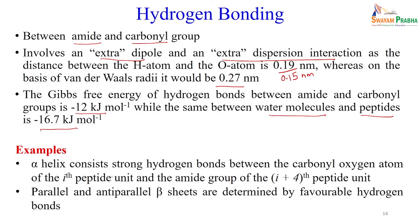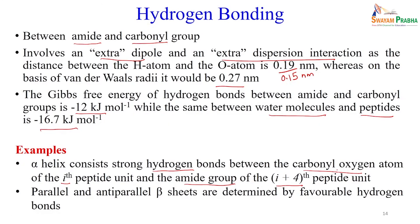In the alpha helix, one cycle contains 3.6 amino acids, and there is a hydrogen bond between the carbonyl oxygen of the i-th peptide and the amide group of the (i+4)-th residue. In beta sheets — which can be parallel or anti-parallel — hydrogen bonds also form between the two beta strands. These are the different intermolecular interactions present in a protein due to the different kinds of amino acids.